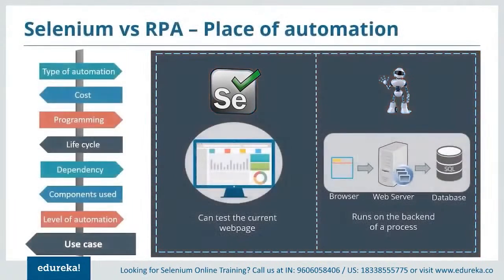Regarding use case: Selenium works on the front end of the process and can test only the current web page. RPA works on the back end and deals with time-consuming processes. The browser details are sent via the web server and stored in a sequence onto the database.